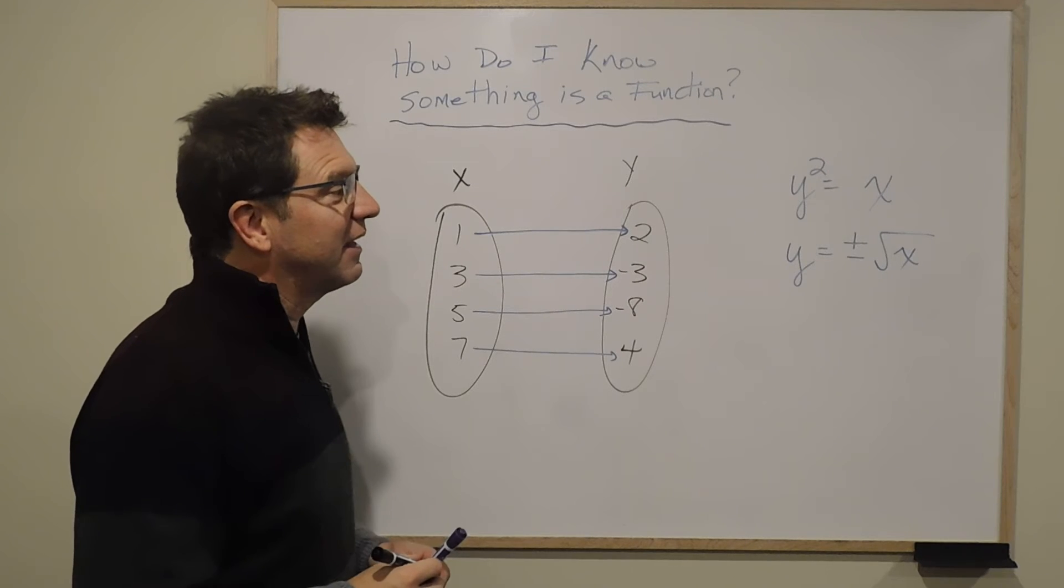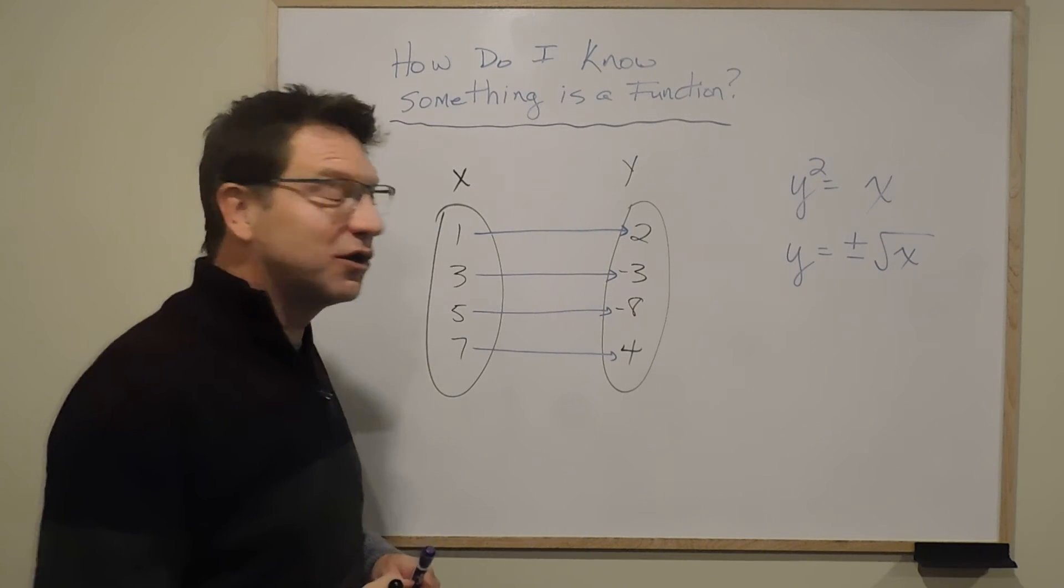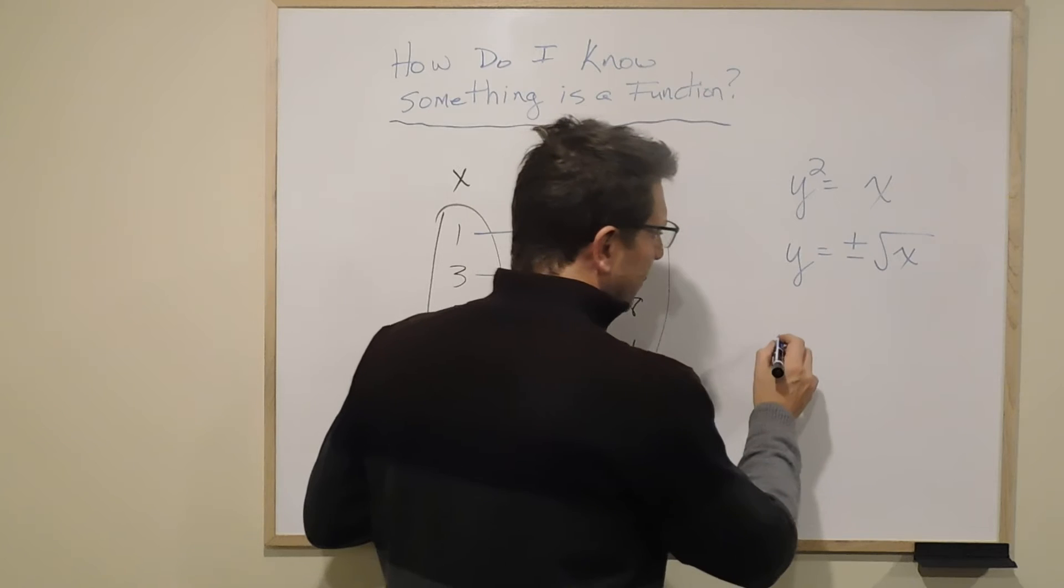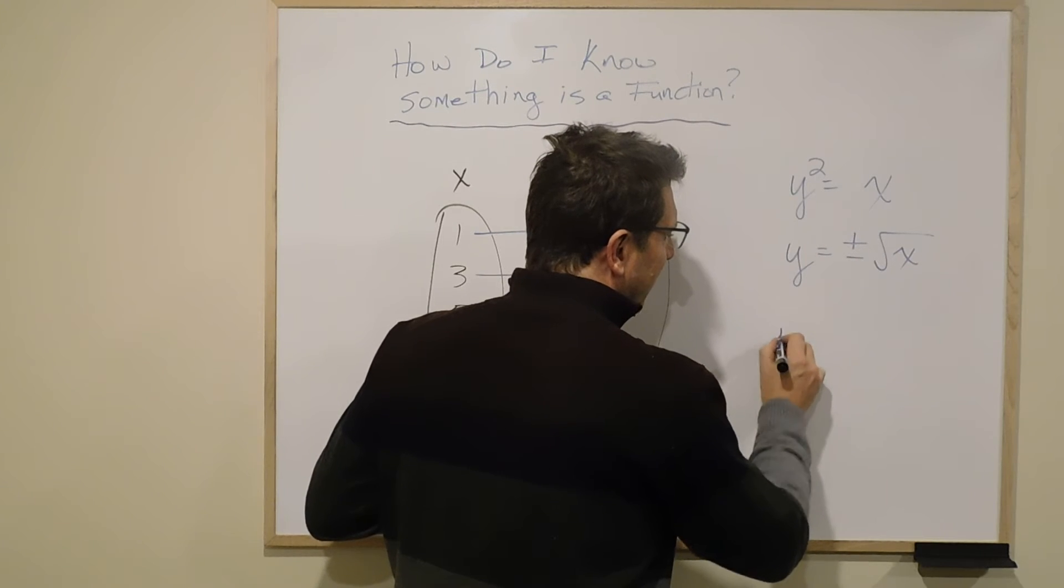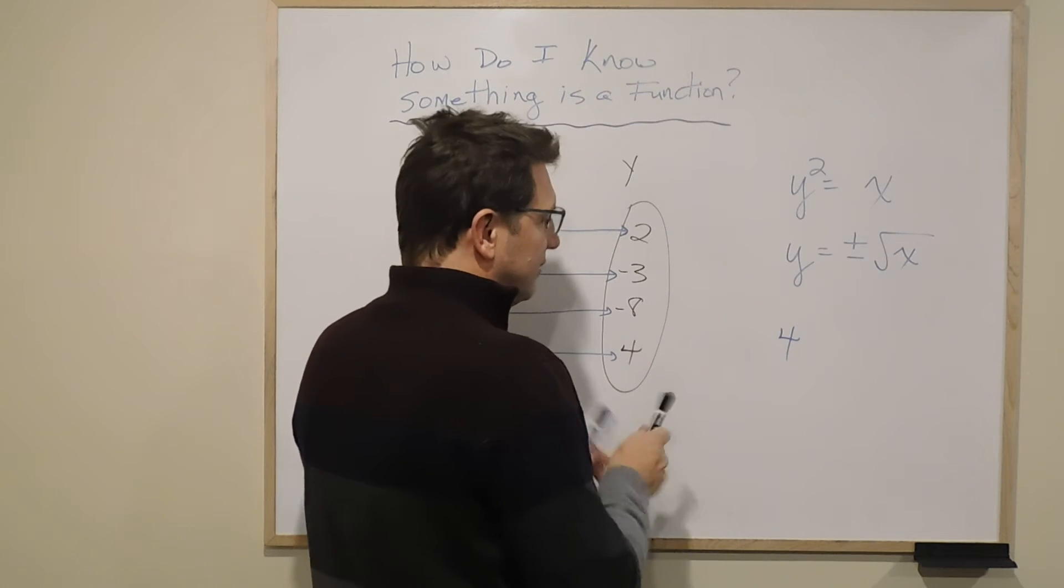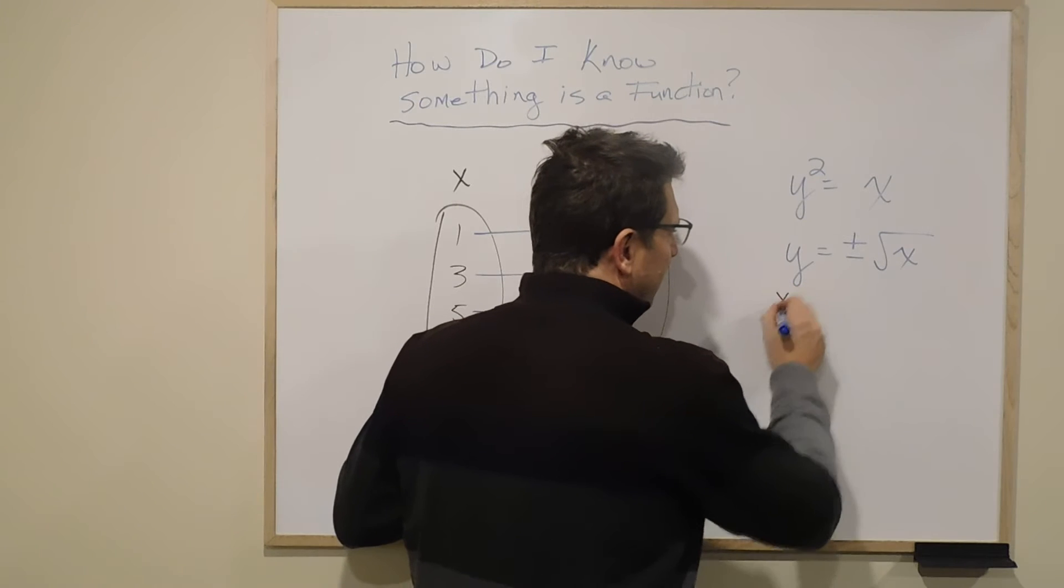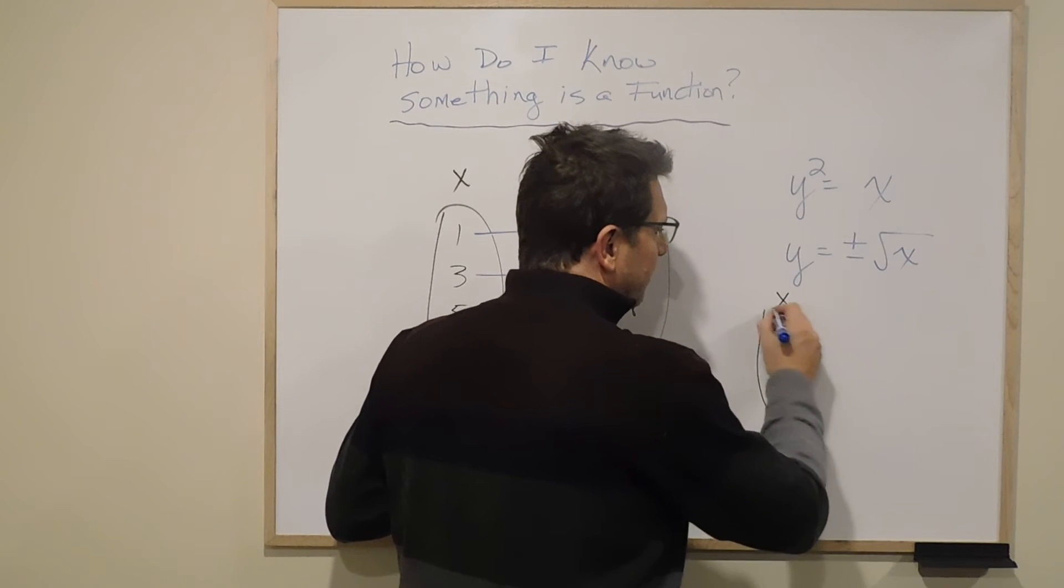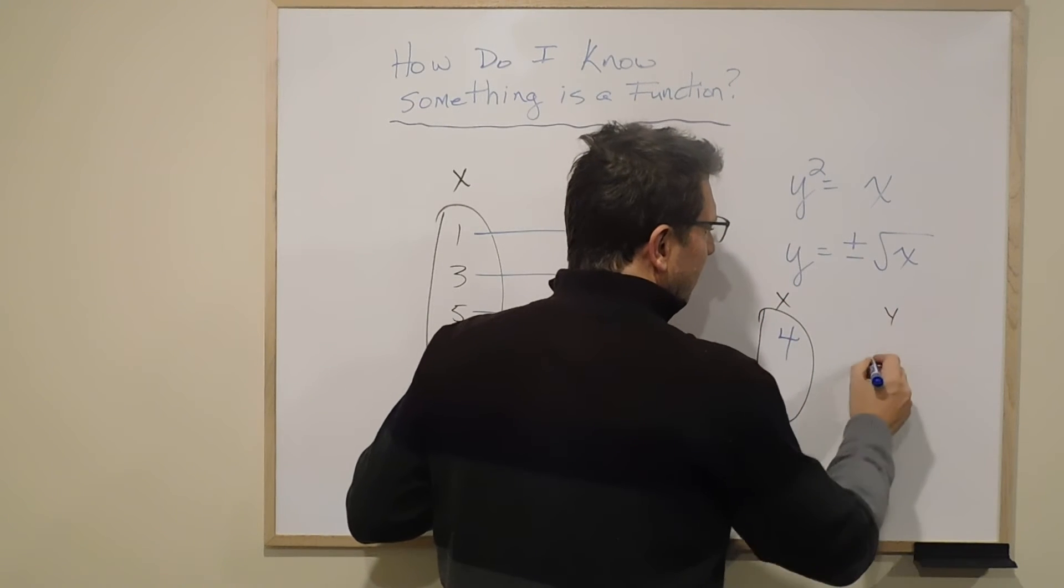Now, in that case, if I chose x, and I'll put it here, if I chose x to be 4, let's do my little diagram here. If I chose x to be 4, what is y?